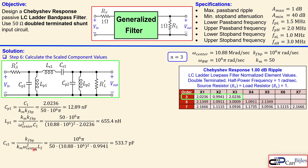Cs1 is calculated using a similar formula involving omega_center and the coefficient X2 = L2 = 0.9941 from the prototype low-pass filter. The calculation gives Cs1 = 533.5 pF. Ls1, the series inductor, is also calculated using L2, Km, and KF_BP, giving Ls1 = 15.82 μH.